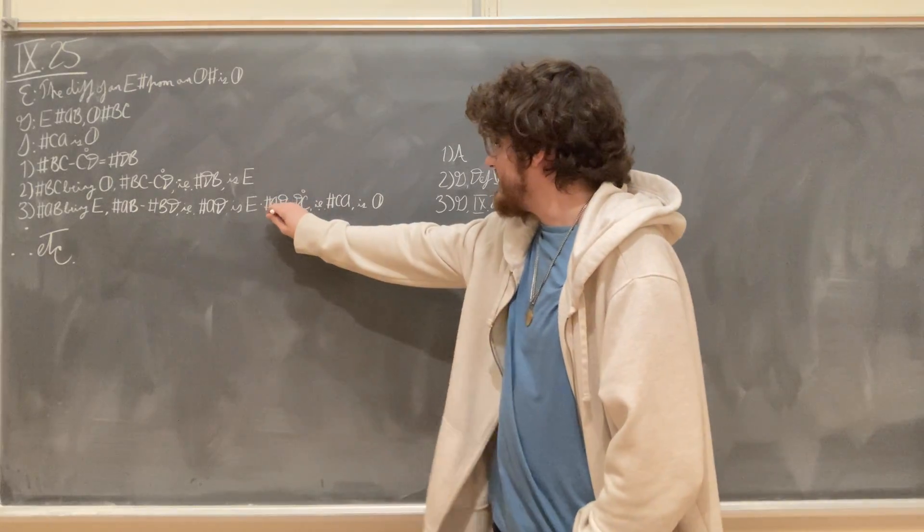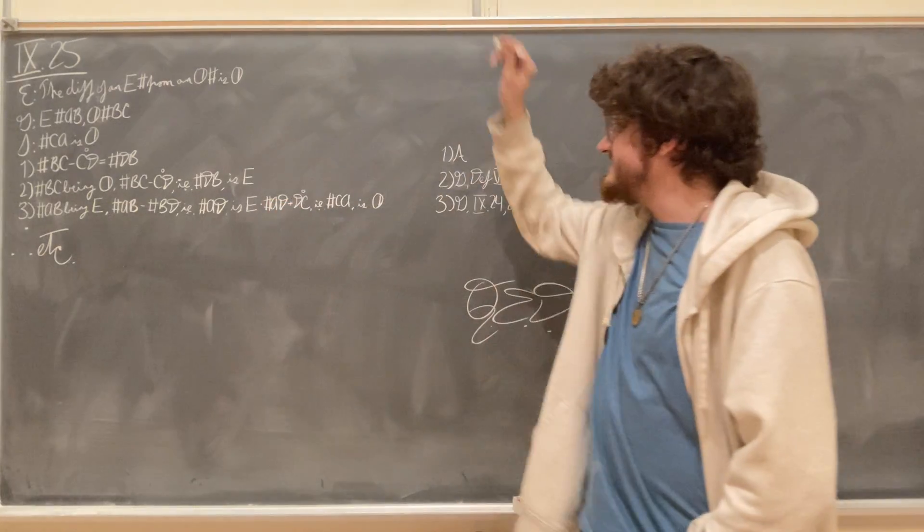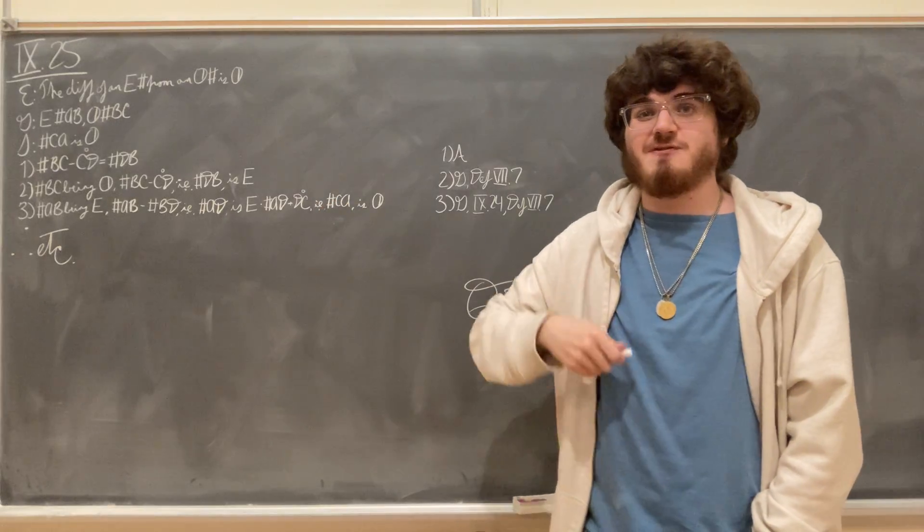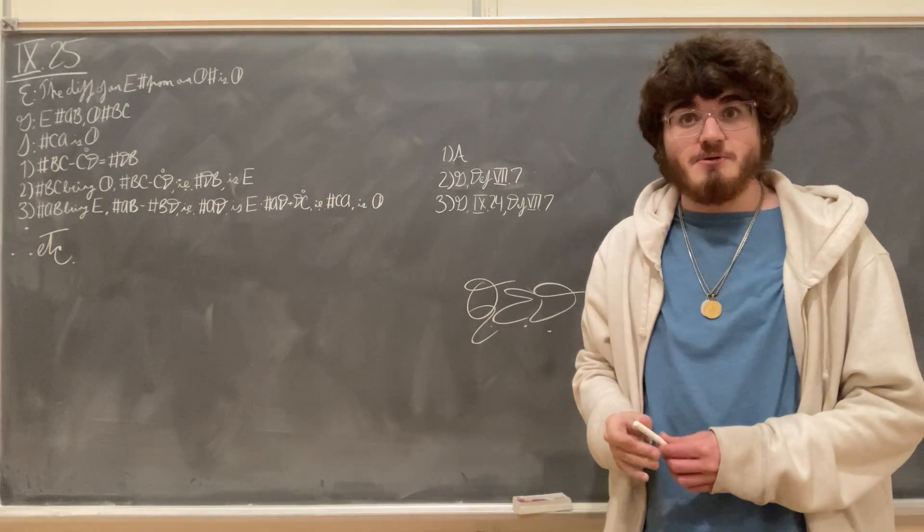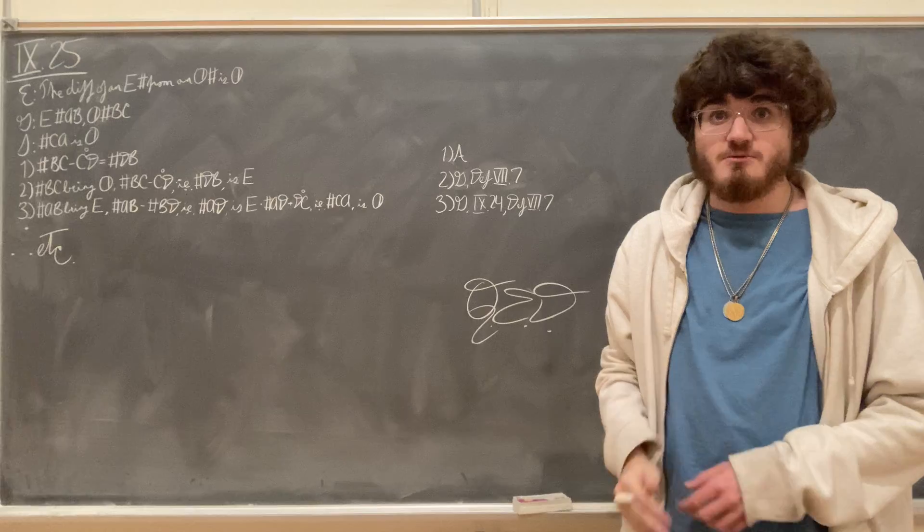So the even number A, D plus the unit D, C, which is the whole C, A, is therefore an odd number, which is what we set out to prove, which means we're done with the proposition,